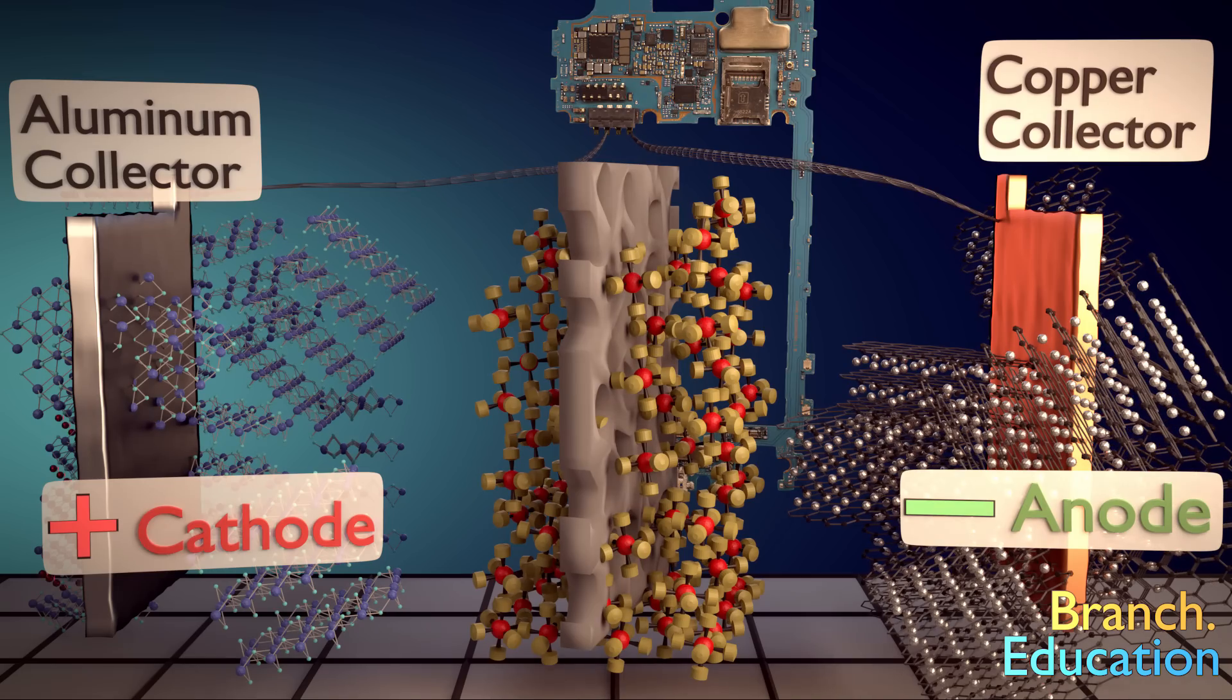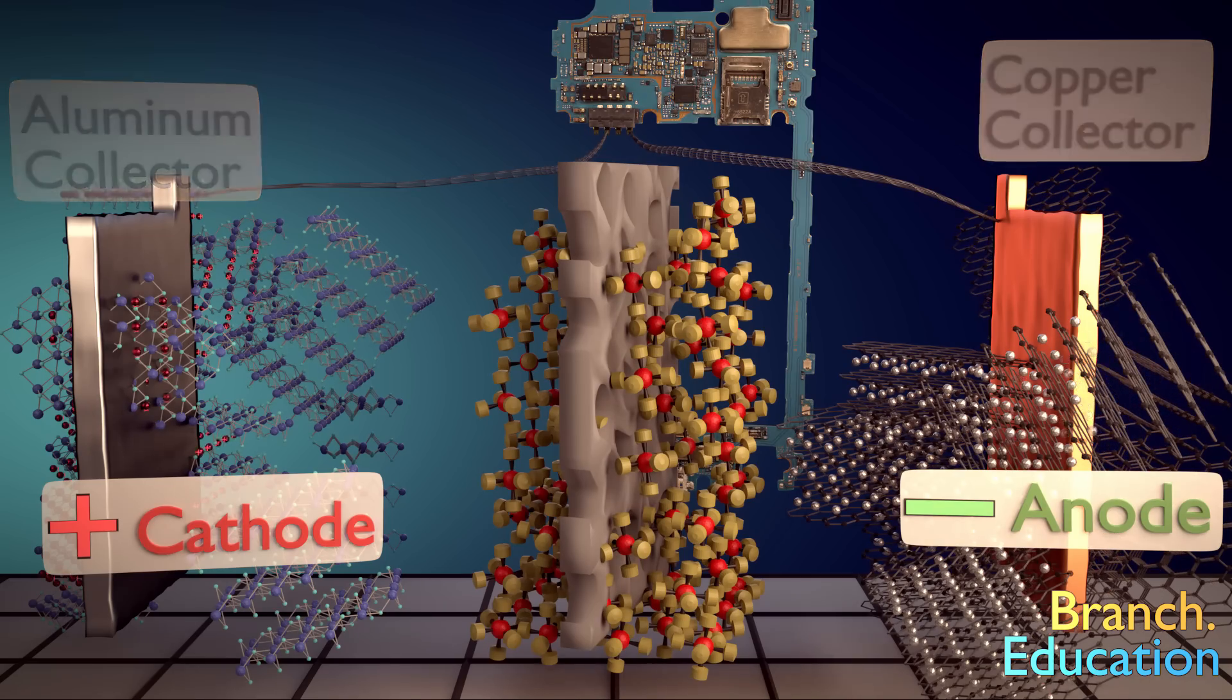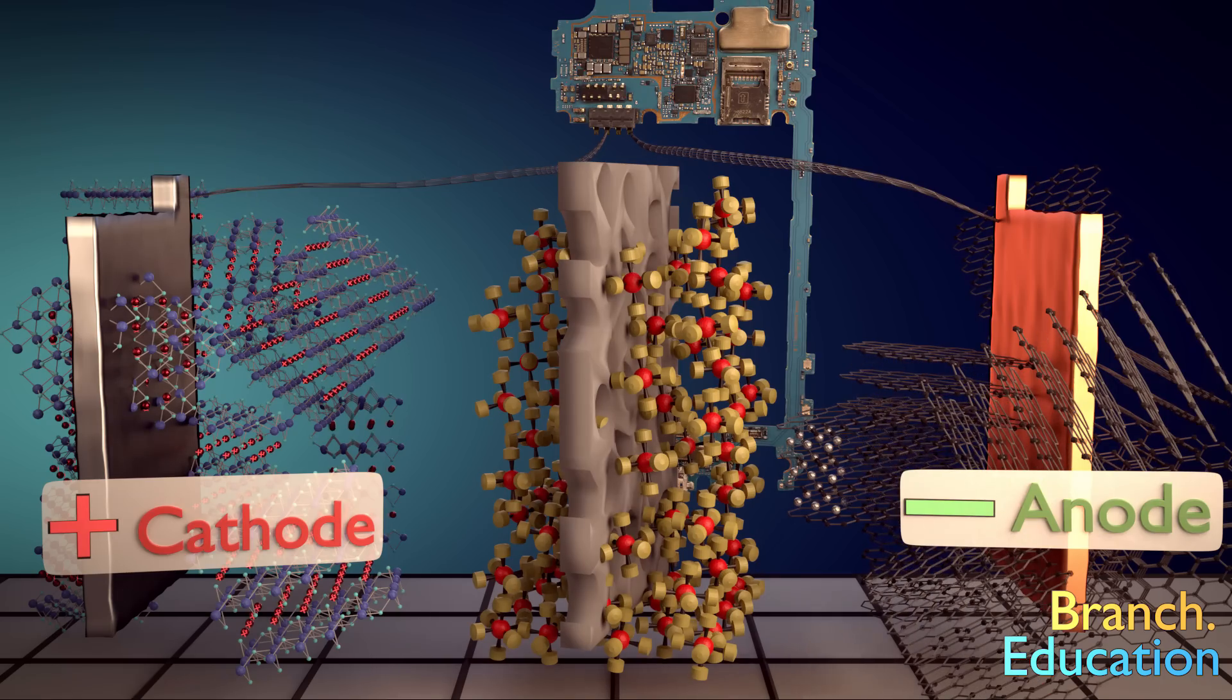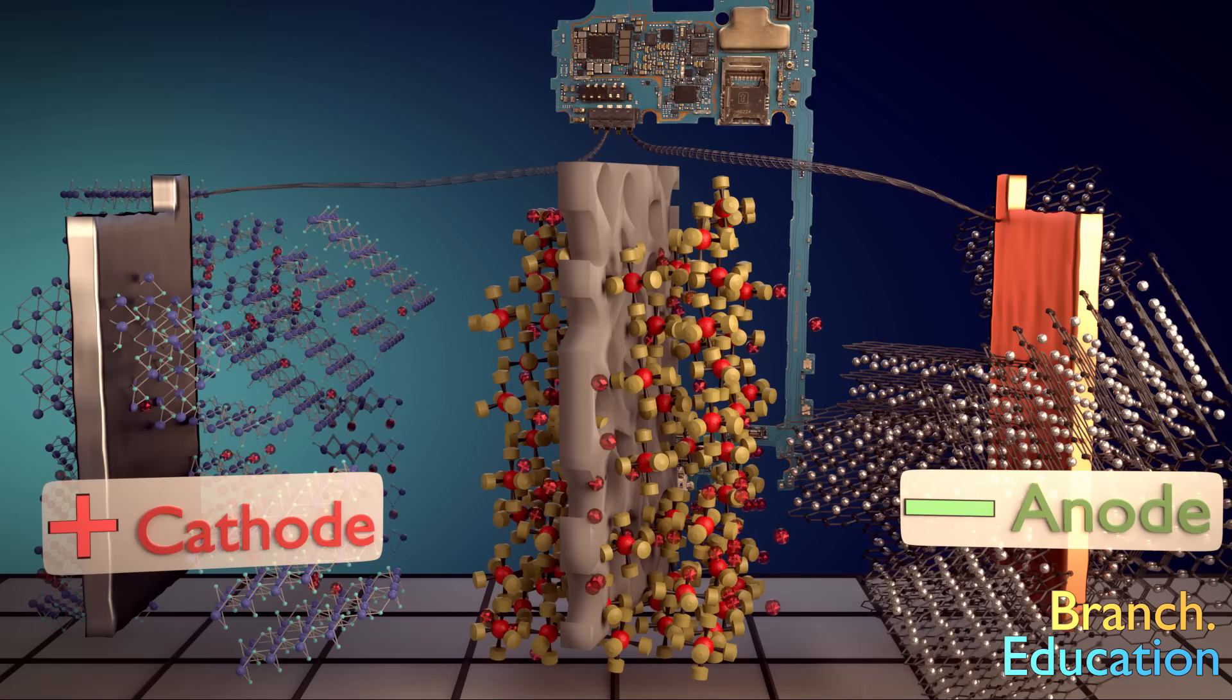These animations are showing 100% of the lithium moving from the anode to the cathode and back. But in reality, there will always be some percentage of lithium that remains in the anode, cathode, and electrolyte, despite the battery being fully charged or discharged respectively.